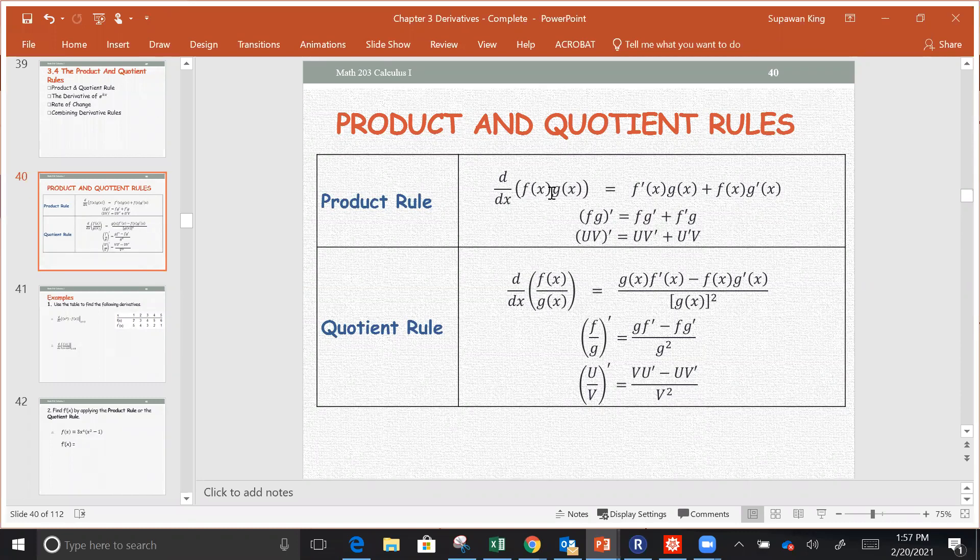Or the derivative of the first function multiplied by the second function plus the first function multiplied by the derivative of the second function. Or in the u and v version, uv' is uv' plus u' times v.